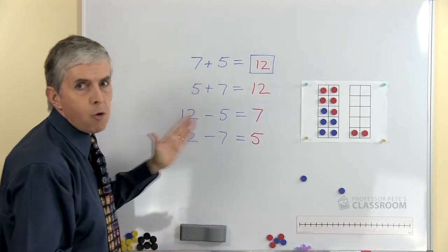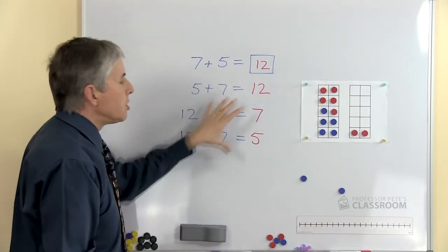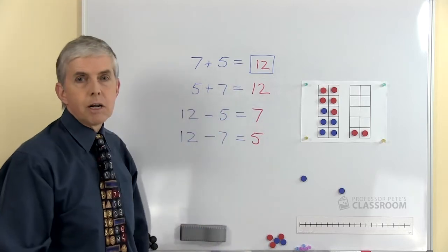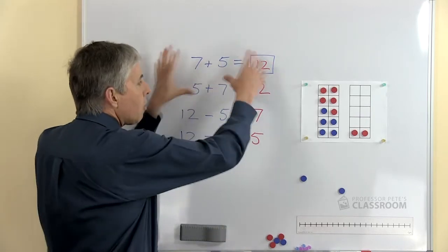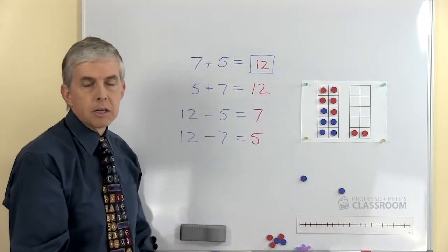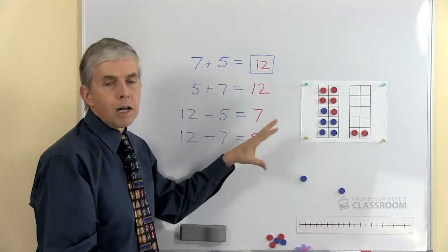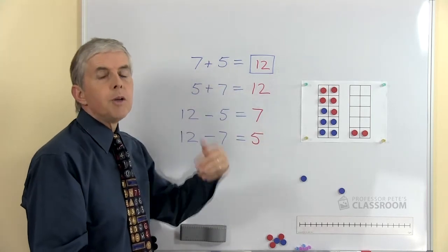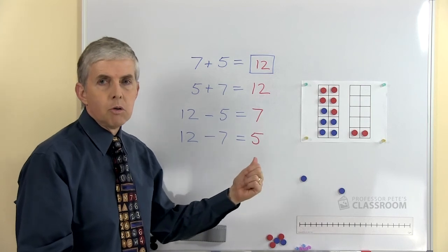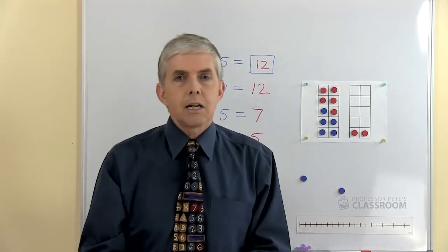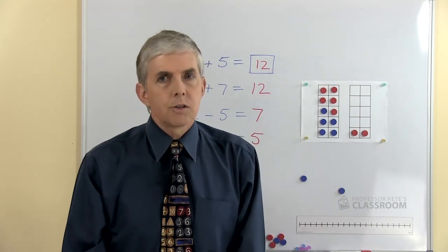So look at that — there are four separate number facts but they all use the same three numbers: 5, 7, and 12. That's why we call that a family of facts, and as I've just shown you, once you know one of these you can actually figure out the other three without a whole lot more time and effort. So that's it — addition fact families! I think you're going to find those really useful.